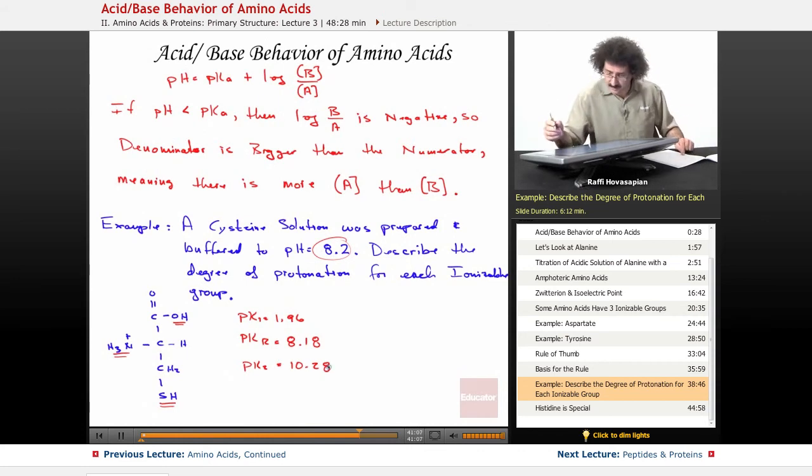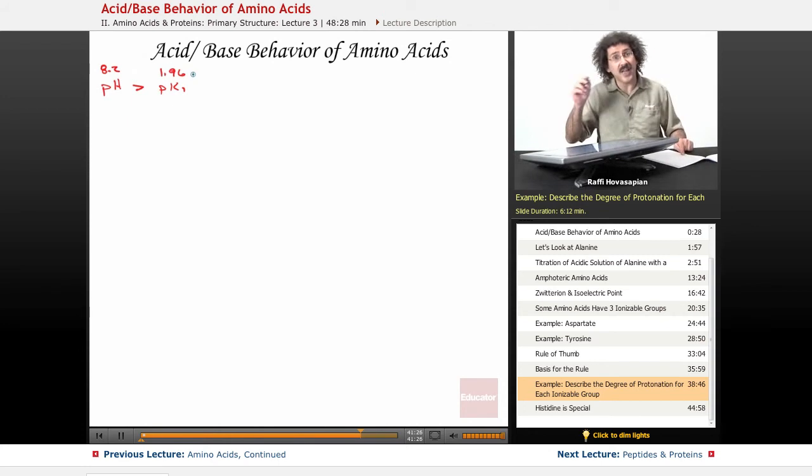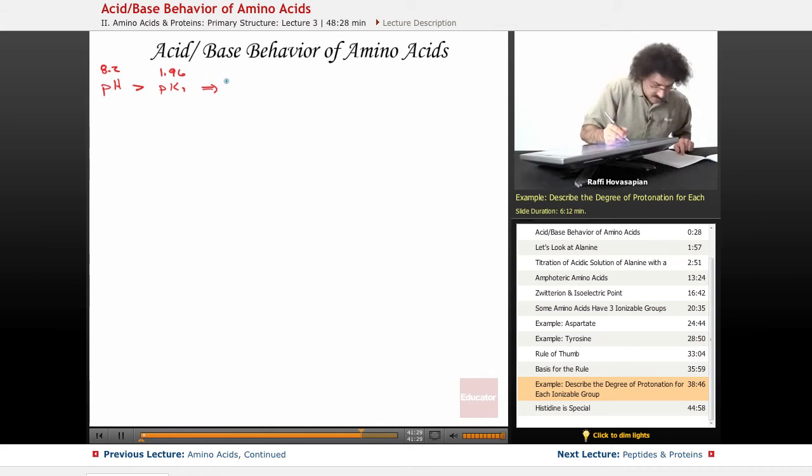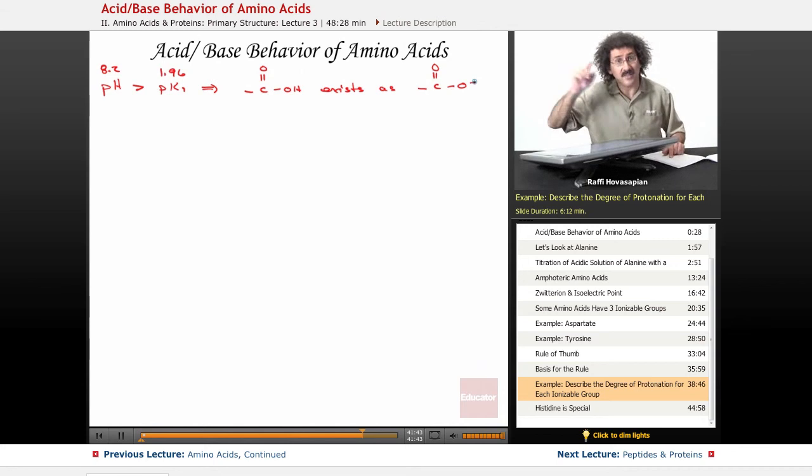Well, now we just use our rule of thumb or reason it out. pH is bigger than pK1, right? pH is 8.2. We said the pH is 8.2 and we said the pK1 was 1.96. Because the pH is bigger than pK1, that implies that the carboxylic acid group exists as a carboxylate group. It's actually been ionized. It has lost its H.